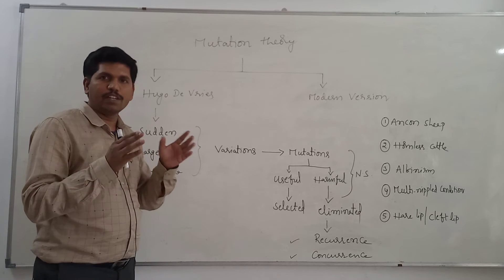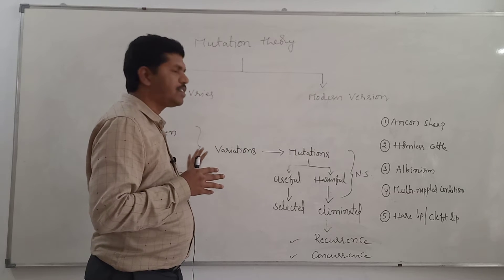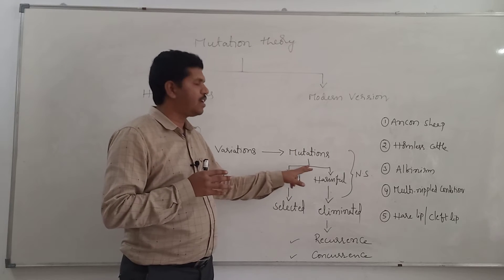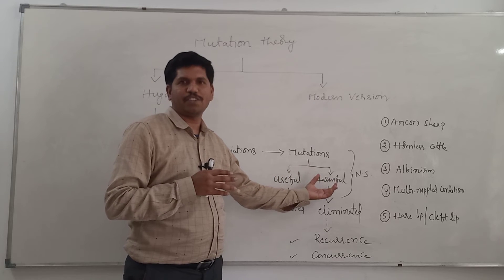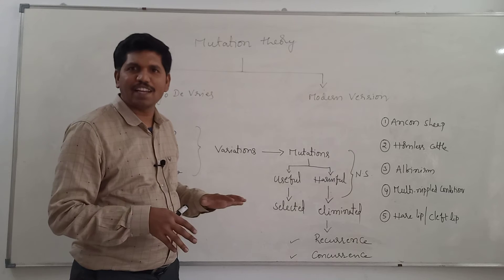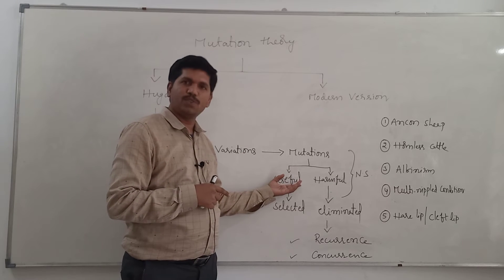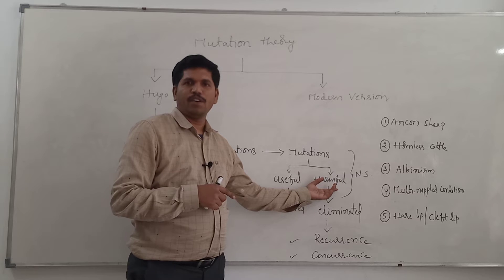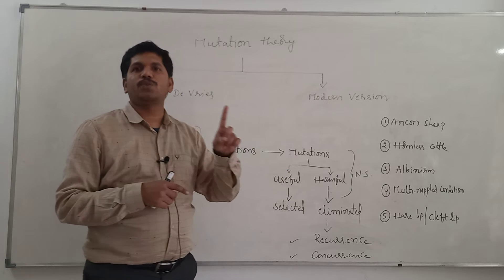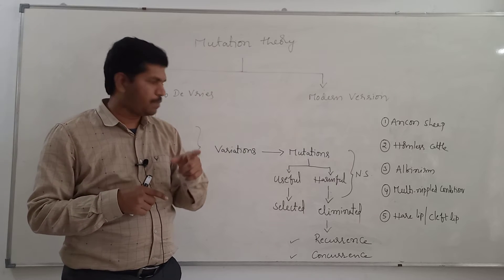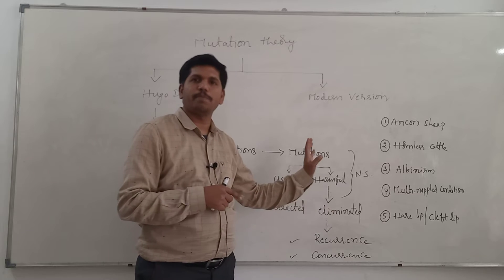According to Hugo de Vries, these mutations — that means these sudden, large, and inheritable variations — are of two varieties: useful mutations and harmful mutations. These variations can be useful or harmful, and they will be subjected to natural selection. That means useful mutations will be selected and harmful mutations will be eliminated.